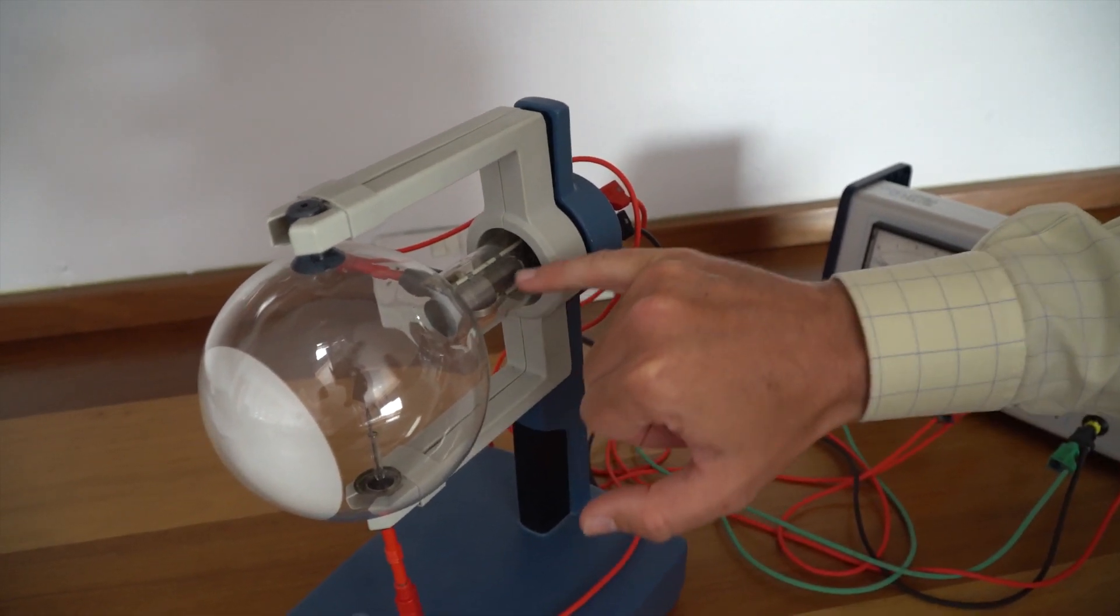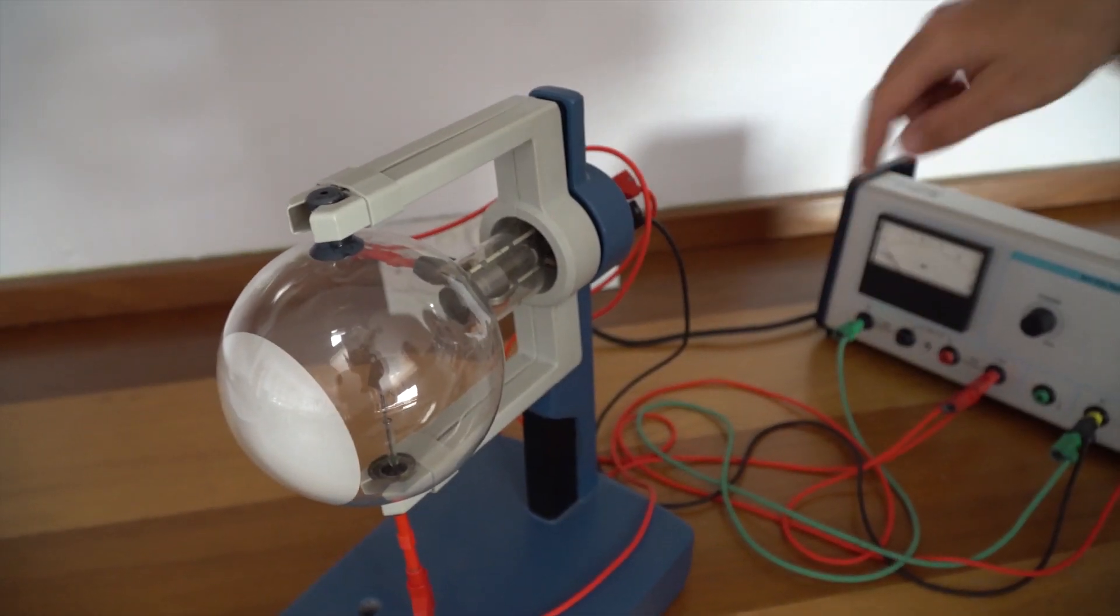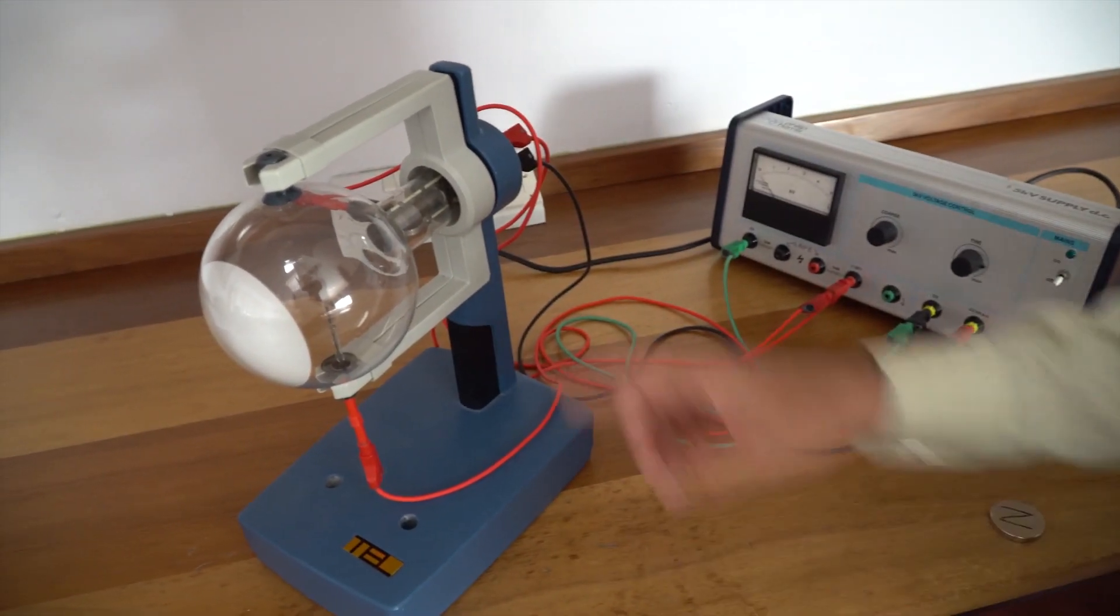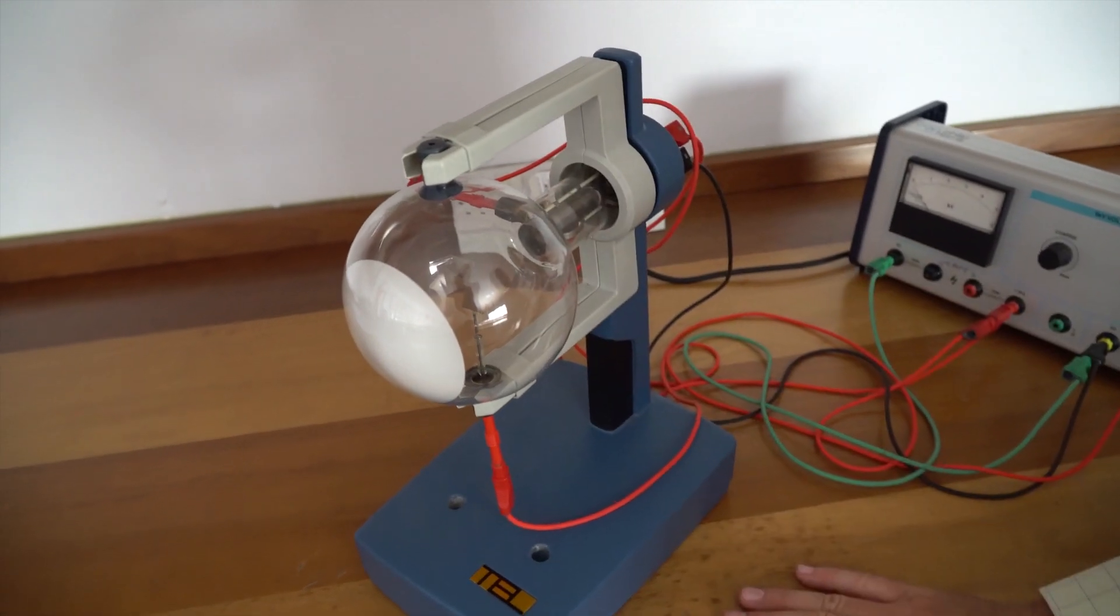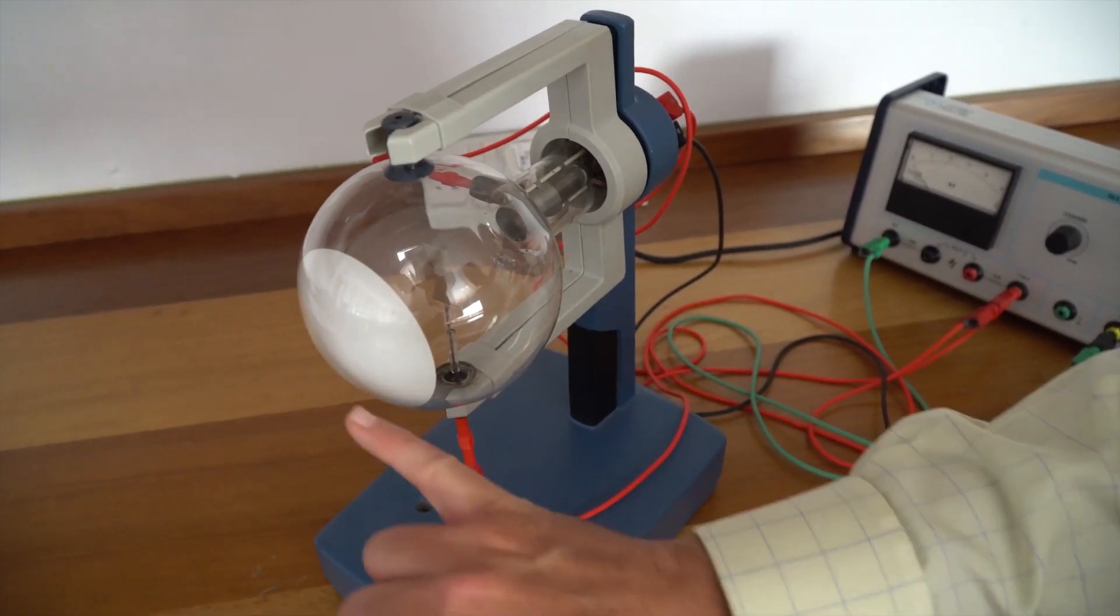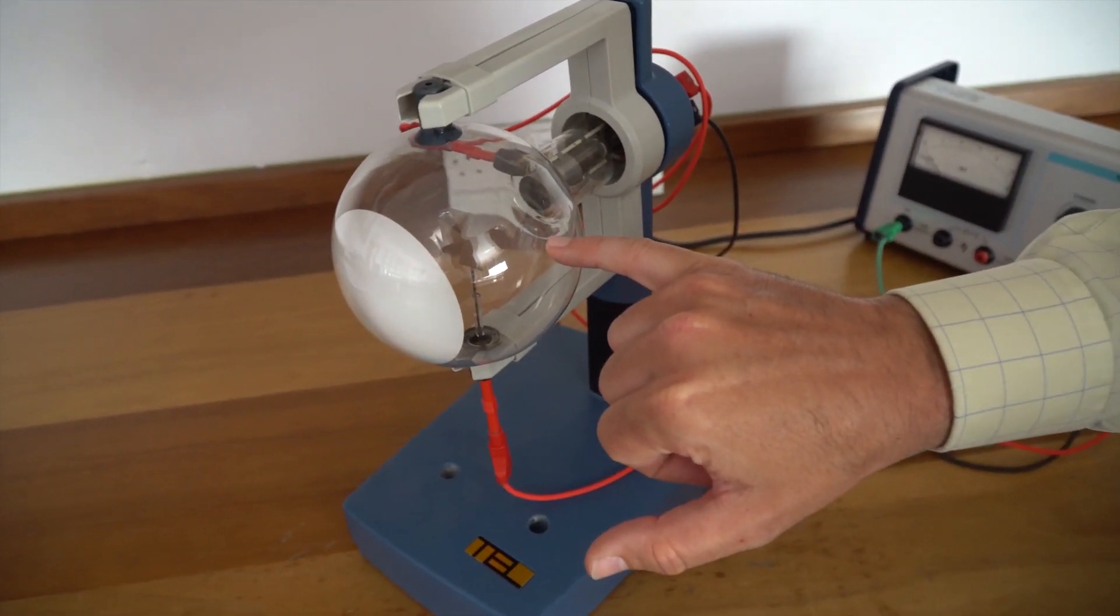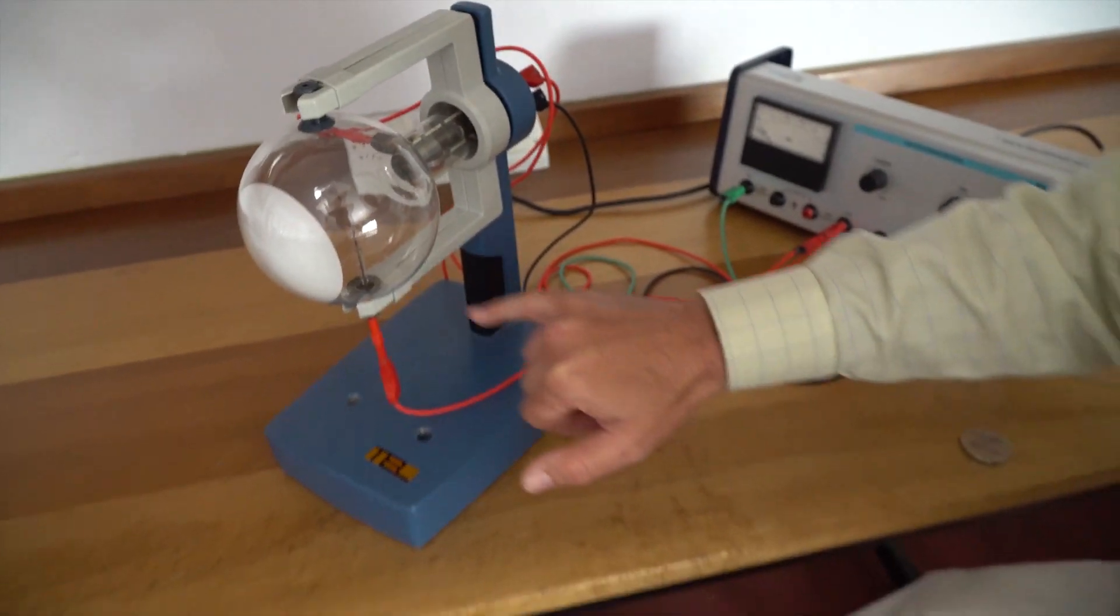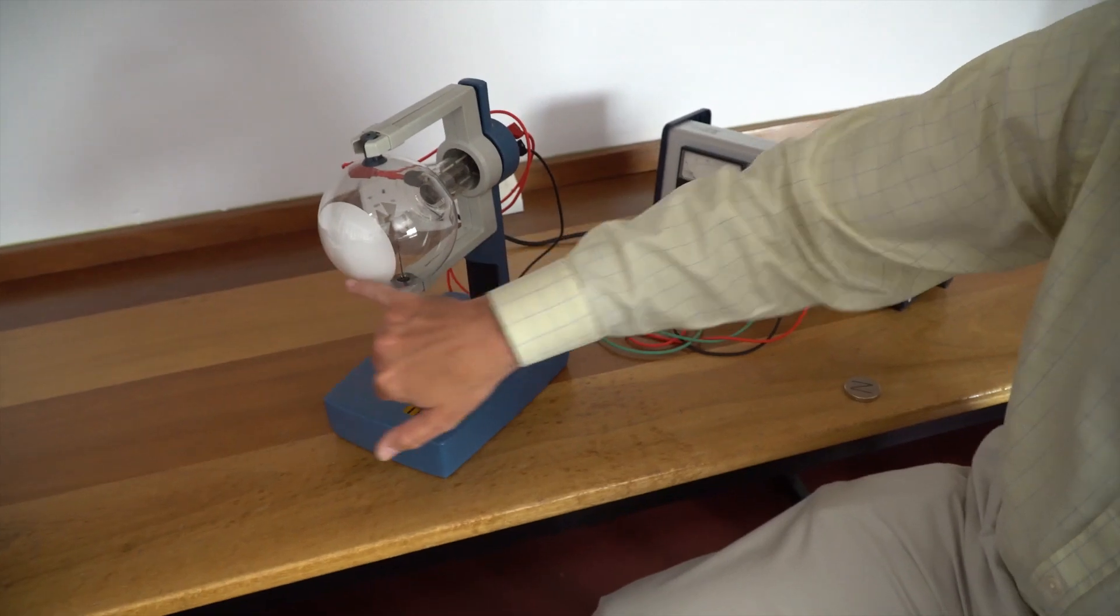You then have a cylindrical electrode which is connected to the positive side of a high voltage power supply. That then accelerates the electrons up to a high speed. They then go through the tube where various things are put in their way. Here we've got a metal Maltese cross shape which is connected to the positive side of the power supply.